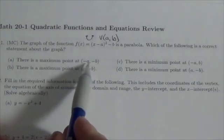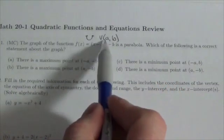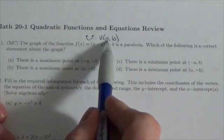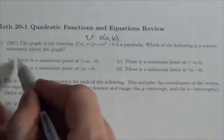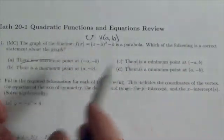It says there is a maximum point at (-a, -b). Well, I know that the vertex, which would be the maximum or minimum, is (a, b). So that can't be it. And besides that, this thing opens up, so it's got a minimum.